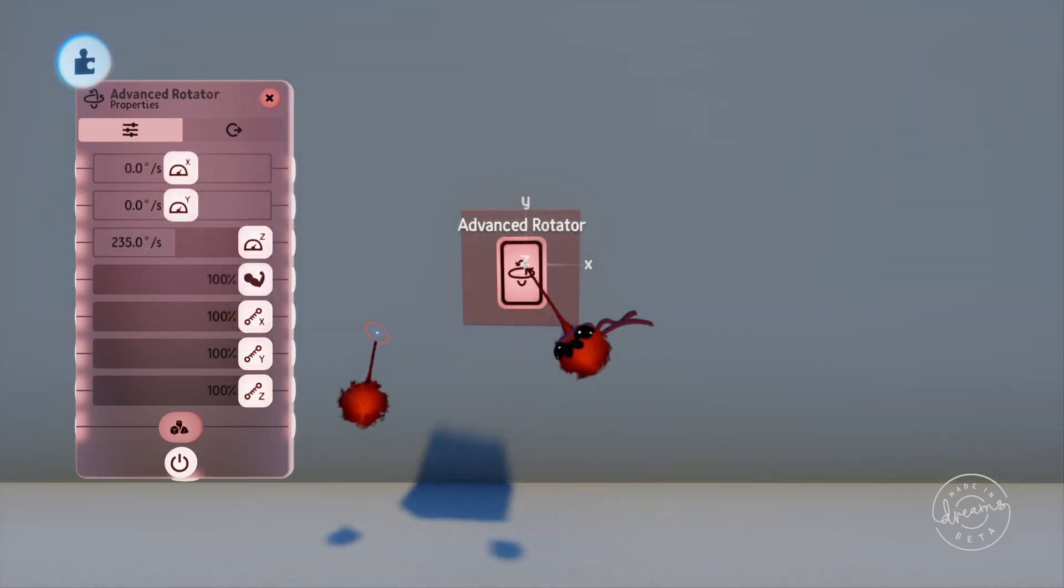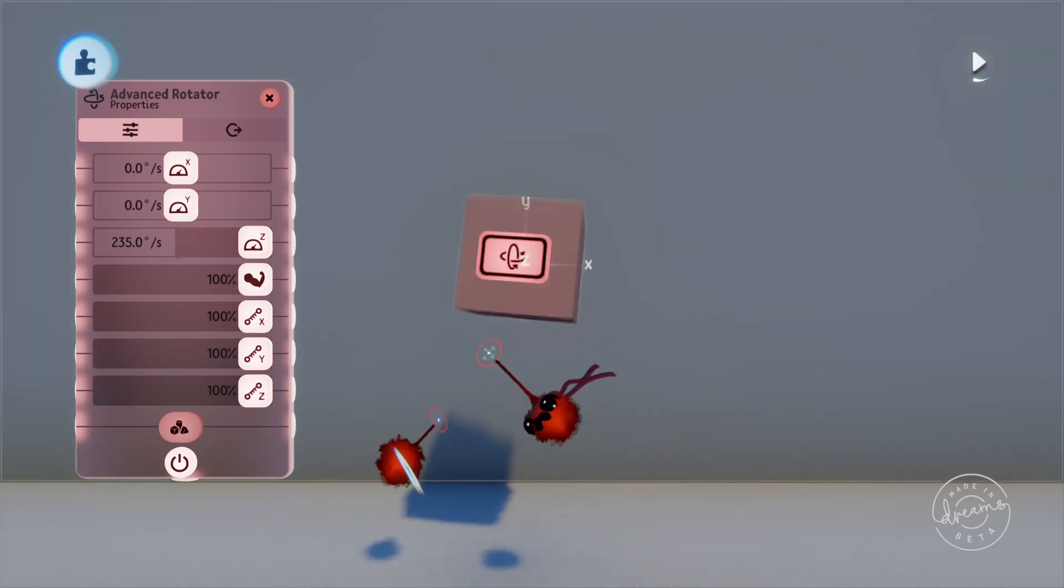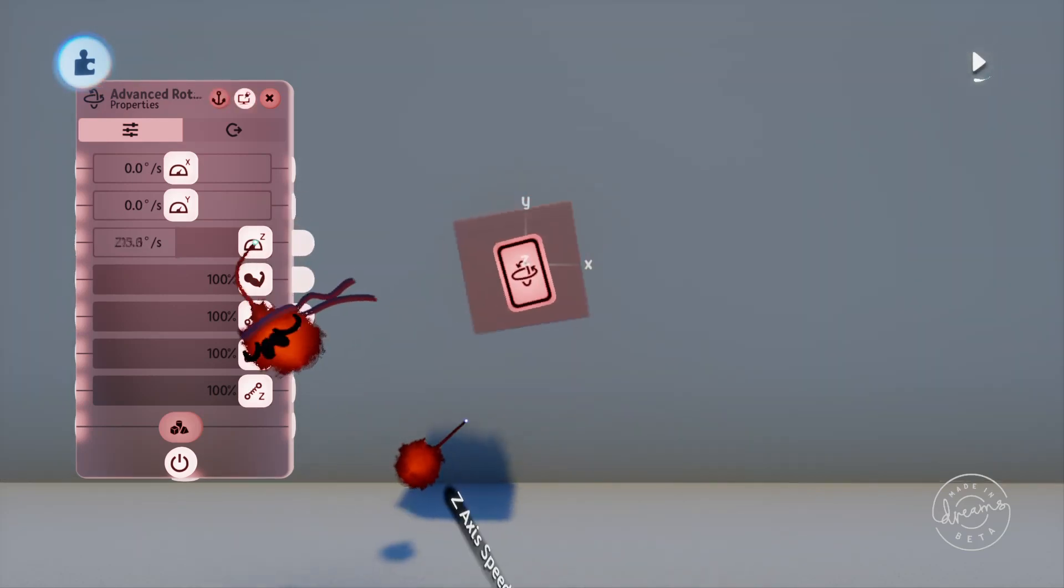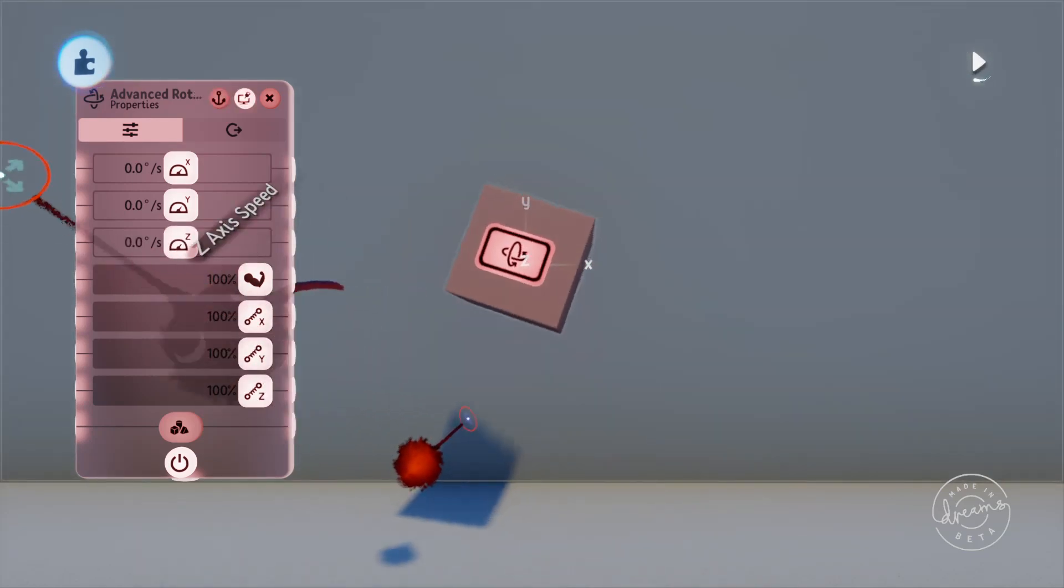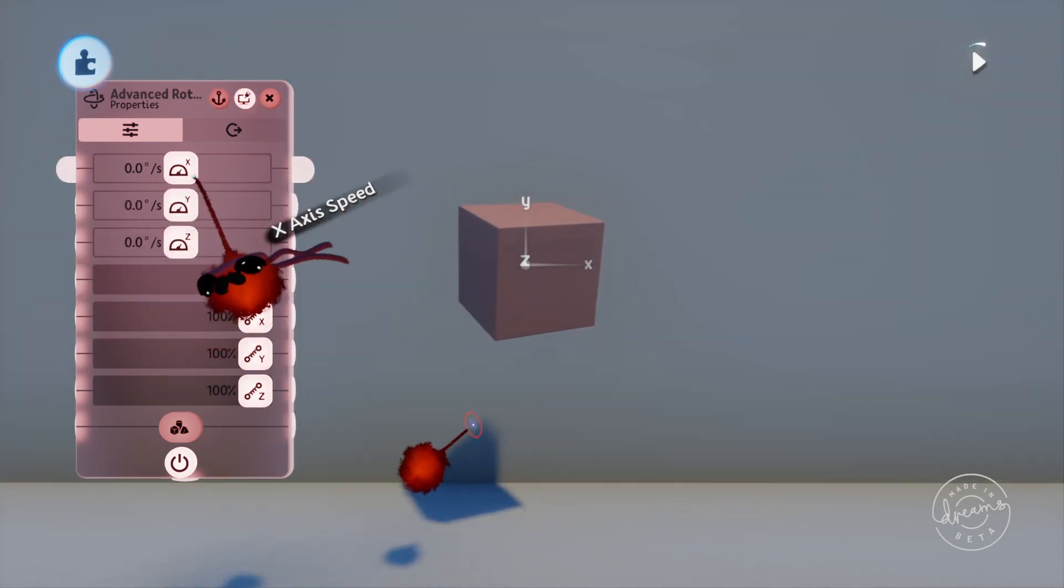If we turn on just the Z speed you can see that the cube rotates around the Z axis. If we increase the X speed it will rotate around the X axis and the same with the Y.